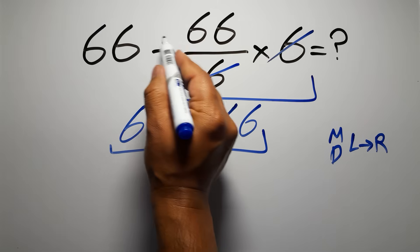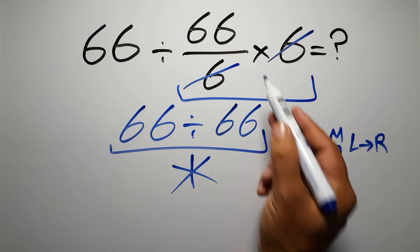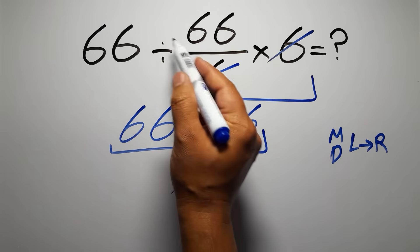So here first we have to do this division, then this multiplication. If we do this multiplication before this division, it is wrong.